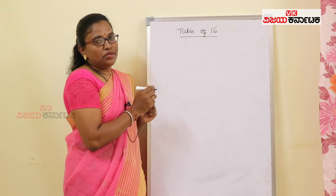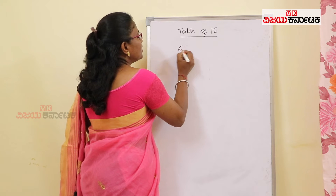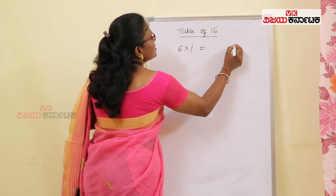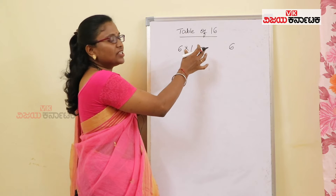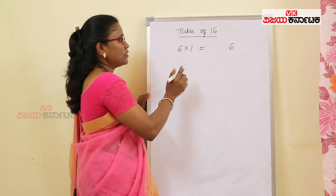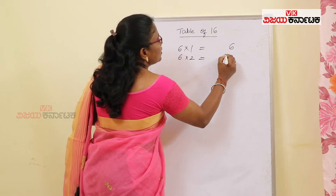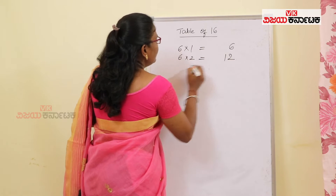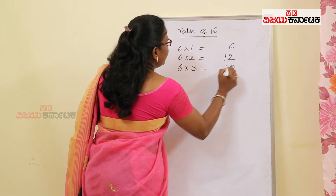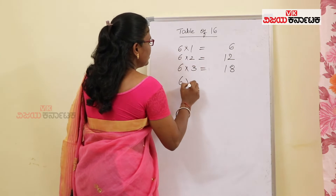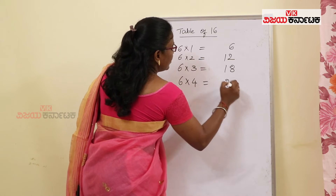First, I will show you how to use 6 tables. So, it is 6. I will show you how to use the tricks. Next: 6, 2, 12; 6, 3, 18; 6, 4, 24.